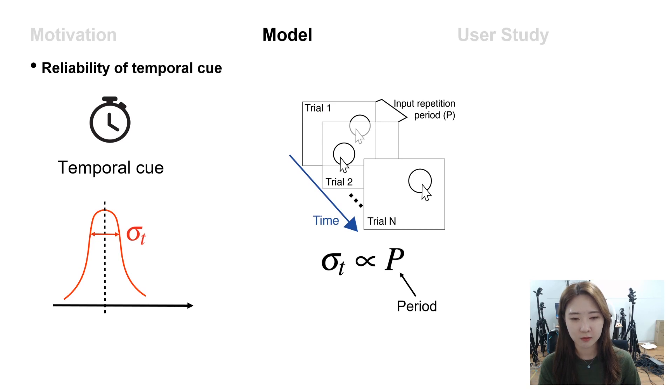In terms of the temporal cue, if the click actions were repeated with a certain period, the user can estimate the next click timing based on the former click intervals. However, as the period becomes longer, it becomes more difficult to estimate the click timing precisely.